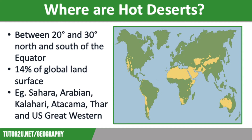Hot deserts are bordered by semi-arid areas such as the Sahel region that crosses northern Africa south of the Sahara Desert. These semi-arid regions are at risk of desertification.